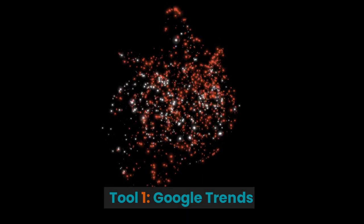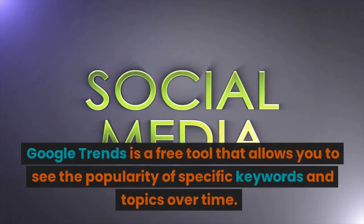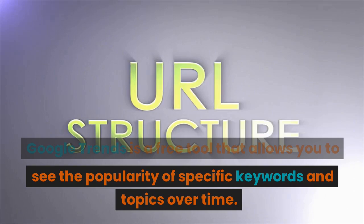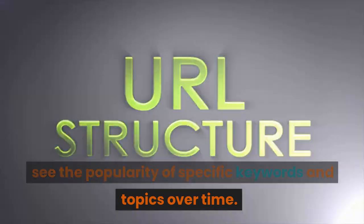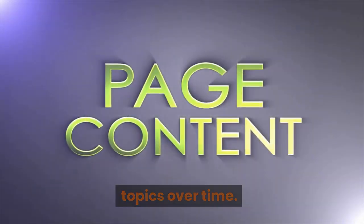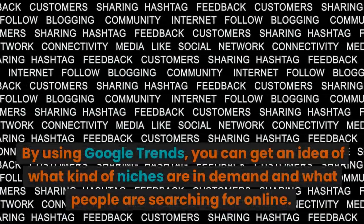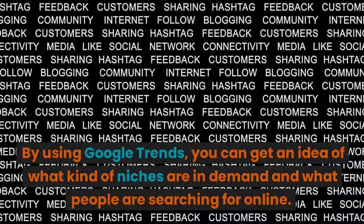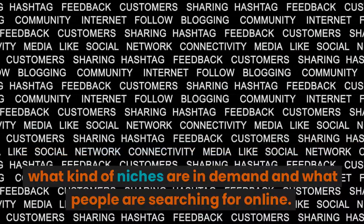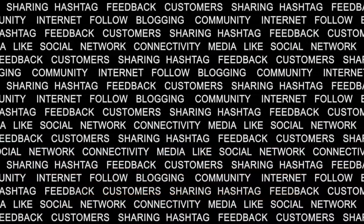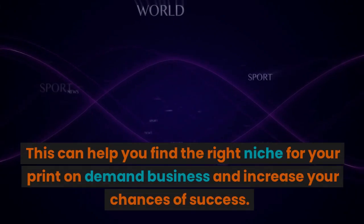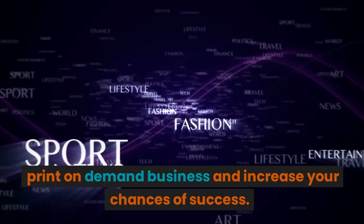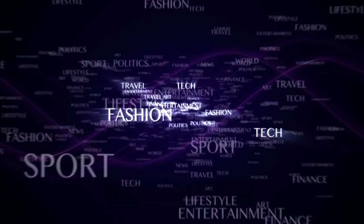Tool 1: Google Trends. Google Trends is a free tool that allows you to see the popularity of specific keywords and topics over time. By using Google Trends, you can get an idea of what kind of niches are in demand and what people are searching for online. This can help you find the right niche for your print-on-demand business and increase your chances of success.